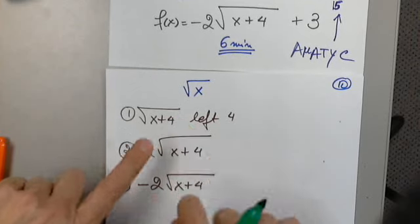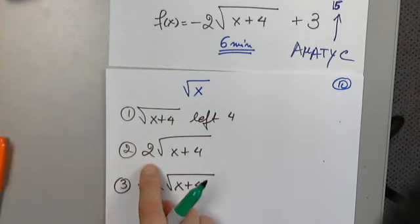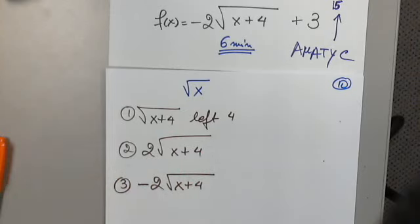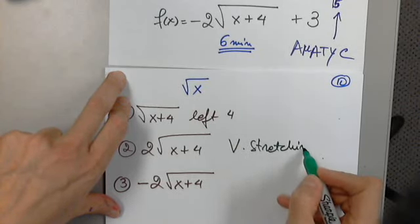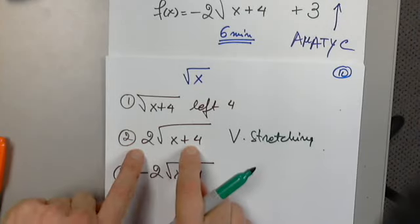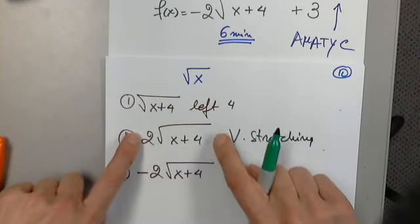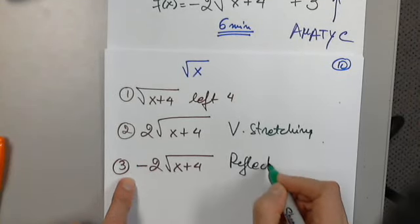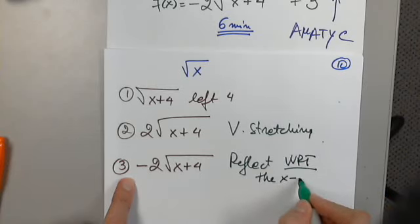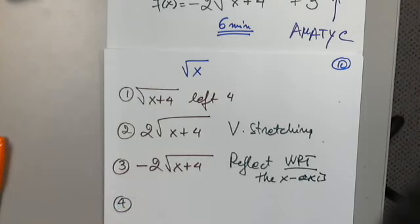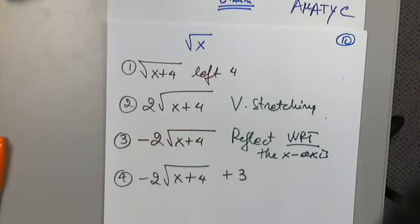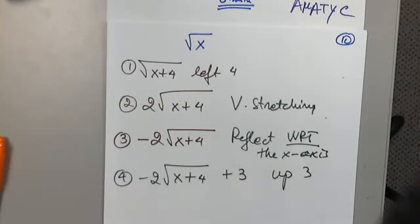So what does multiplying by two do to this function? Am I changing x? No — I'm changing y, it's outside. The number does not touch x. So this is a vertical stretching by a factor of two. Now the next transformation: reflecting with respect to the x-axis. And the final transformation — negative two times the square root of x plus four, plus three — gives a vertical shift of three units upward.